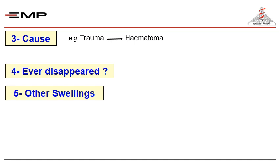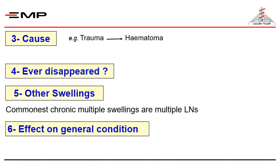Ask about other swellings in the body — the classical example of multiple chronic swellings is multiple lymph nodes. And finally, ask about the effect of the swelling on the general condition. Inflammatory swellings can cause fever; chronic specific inflammations over a long time and advanced malignancy can cause weight loss.